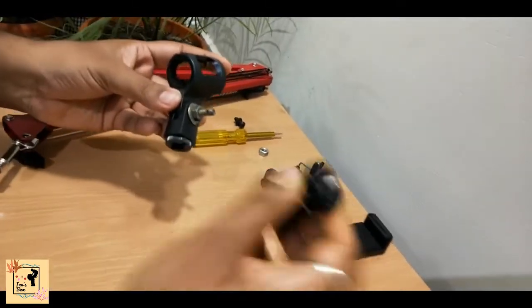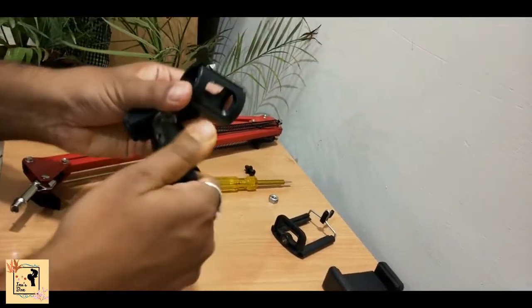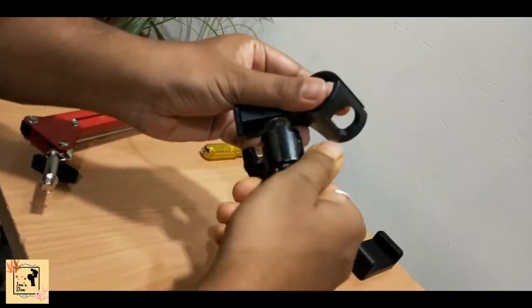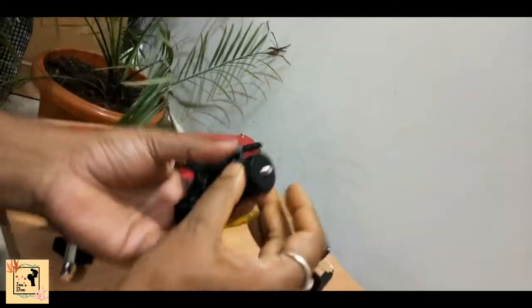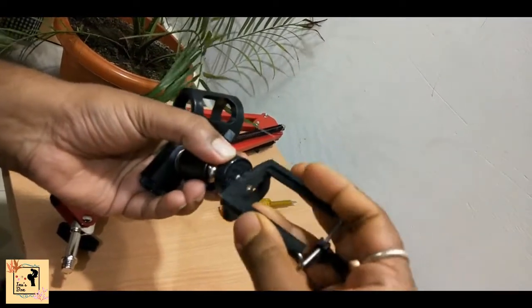Now, this is a ball head bought from Amazon to provide an extra 360 degree rotation to the mobile holder. And now, we need to attach the mobile holder to it.